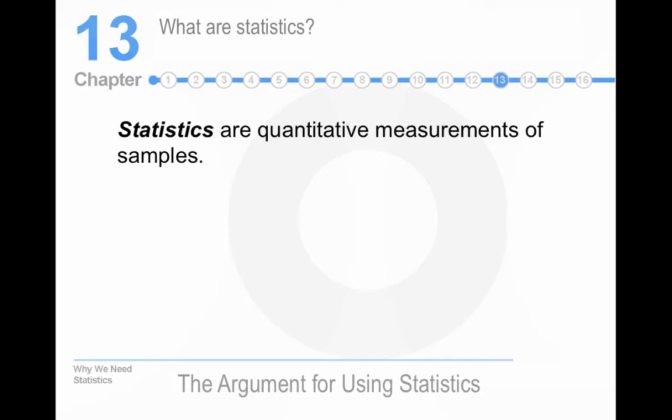Well, they are quantitative measurements of samples. Benjamin Disraeli, who was a British Prime Minister, gave a different definition. He said there are three kinds of lies: lies, damn lies, and statistics.